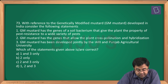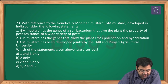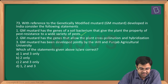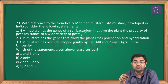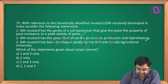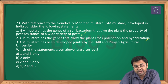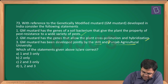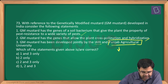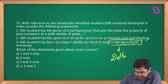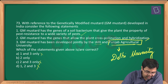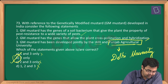Question number 73: with reference to genetically modified mustard developed in India — Statement 1 says GM mustard has genes from soil bacteria giving pest resistance — hold on. Statement 2 says GM mustard has genes allowing cross-pollination and hybridization — hold on. Statement 3 says it was developed jointly by IARI and Punjab Agricultural University — wrong; it was developed under the supervision of Delhi University. Since options A, C and D include statement 3, we are left with statement 2 only.